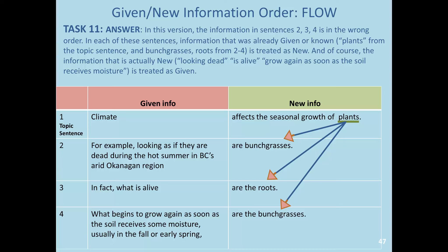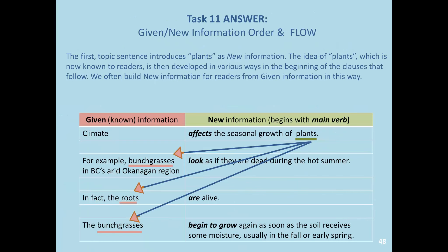Pause the video here and read this over. We see that putting this in the original order, the first topic sentence introduces 'plants' as new information. Then the idea of plants is picked up as already known, so it's in the given or known position of those clauses. This shows how we often build new information from known information for our readers.